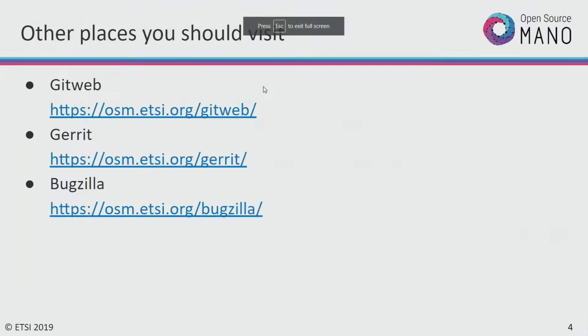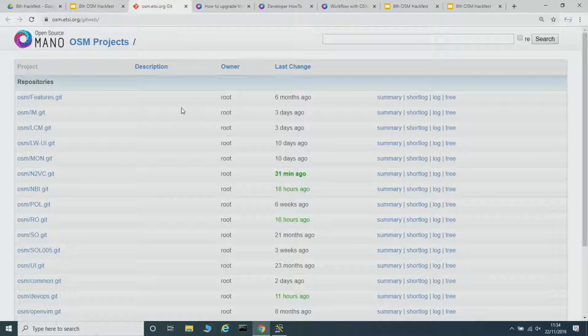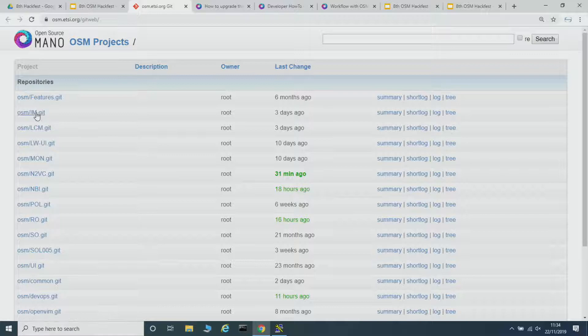Other important places you should visit if you want to contribute to the community: we have GitWeb, Gerrit, and Bugzilla. If you're familiar with the DevOps workflow, you know these tools already. GitWeb lets you see basically every commit and every project inside the Git. This is a very nice web interface of the different components of OSM — the commits, the branches, everything. You can take a look at it here.